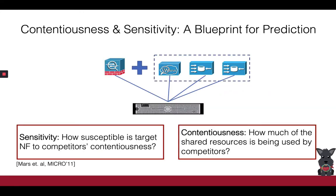SlowMo draws inspiration from a blueprint presented in the microarchitecture community that introduces the concepts of contentiousness and sensitivity. Contentiousness quantifies the amount of pressure that a set of competing NFs apply on the shared hardware resources. Sensitivity, on the other hand, quantifies how susceptible the target NF is to competitors' contentiousness. SlowMo leverages these two concepts to predict the target's performance drop.